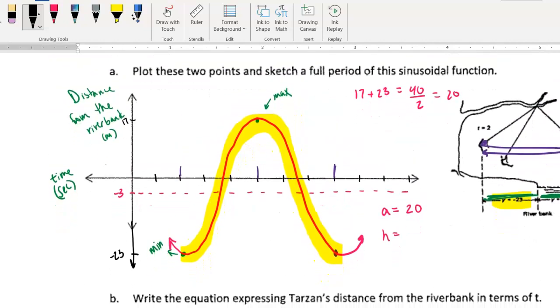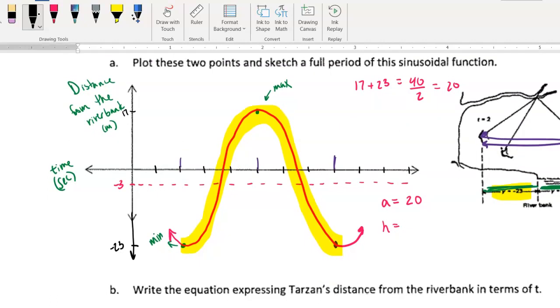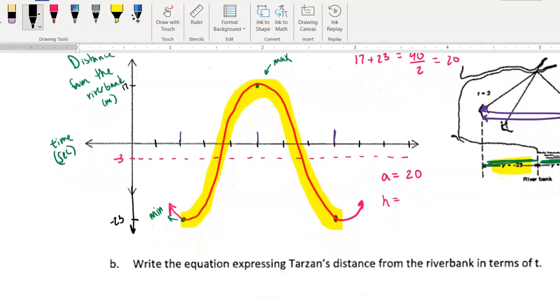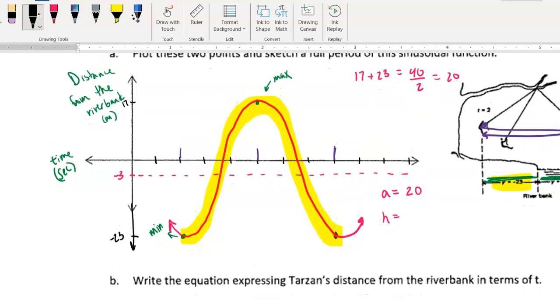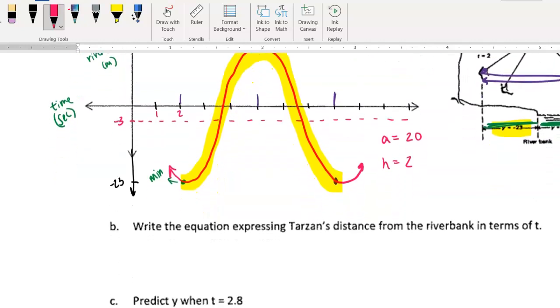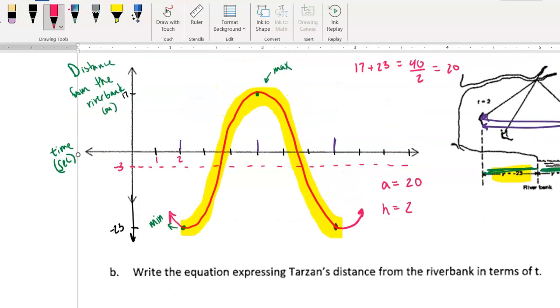So maybe you see that better now. So I see that the lowest point now has been moved to the right two units. Because remember, this represents one second, two seconds. So it's been moved to the right two units. So my H value, my phase shift there would be two units. My K value represents my vertical shift.